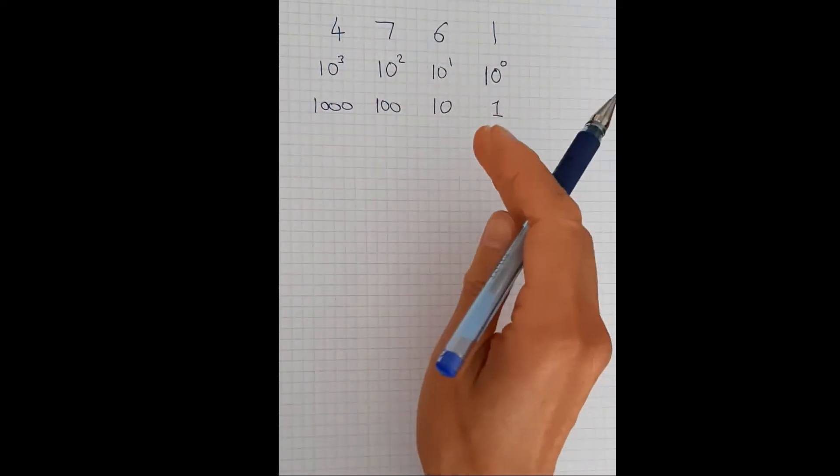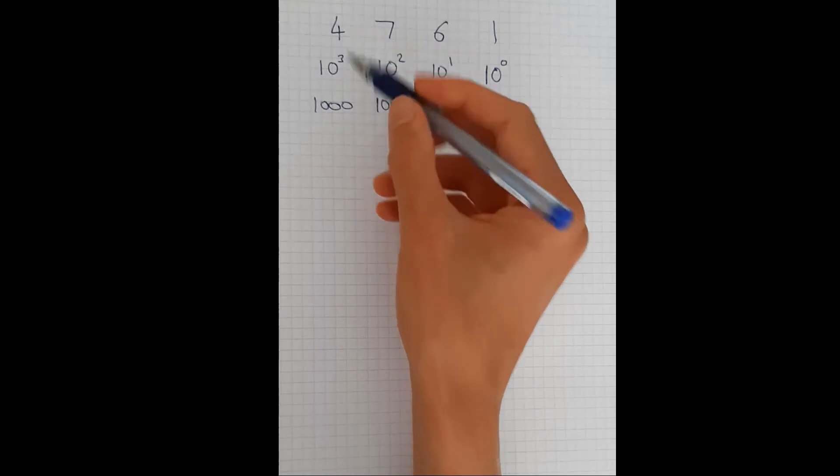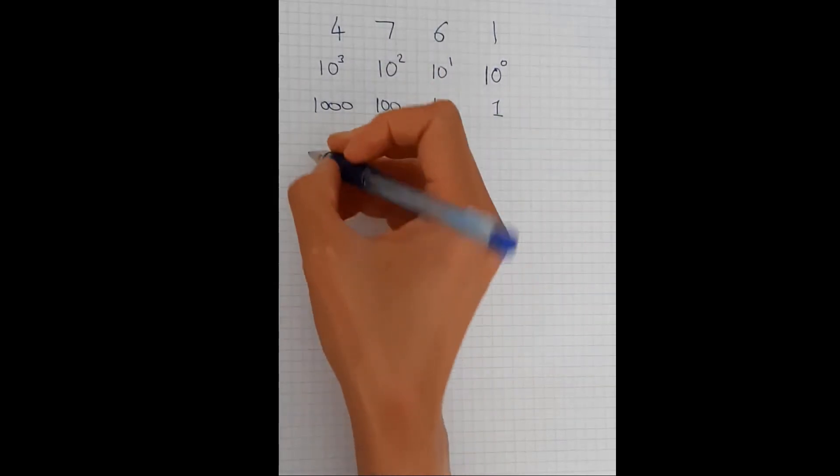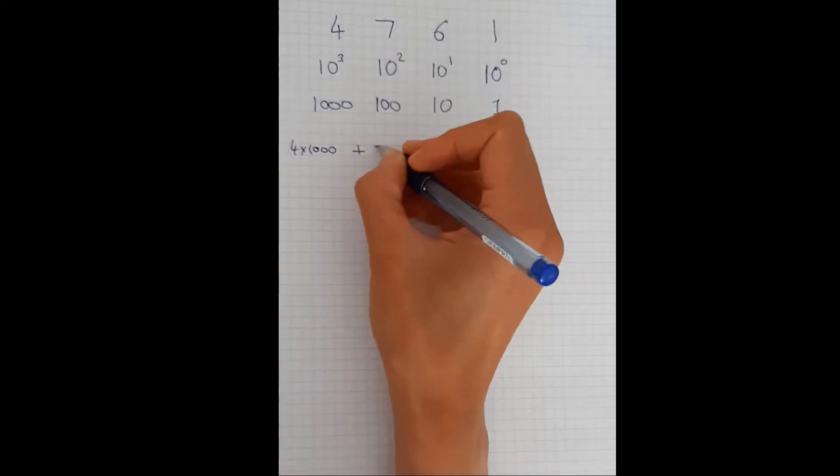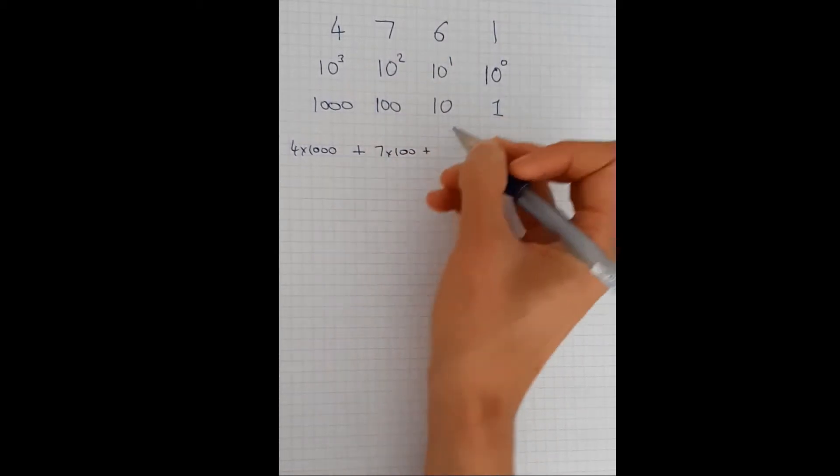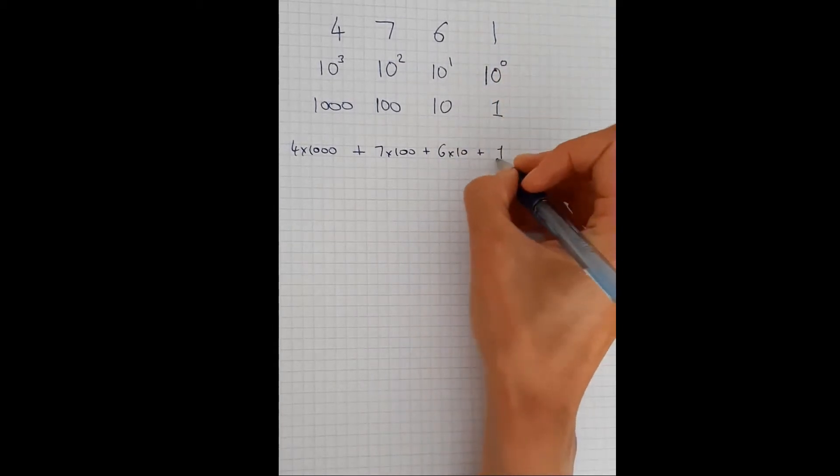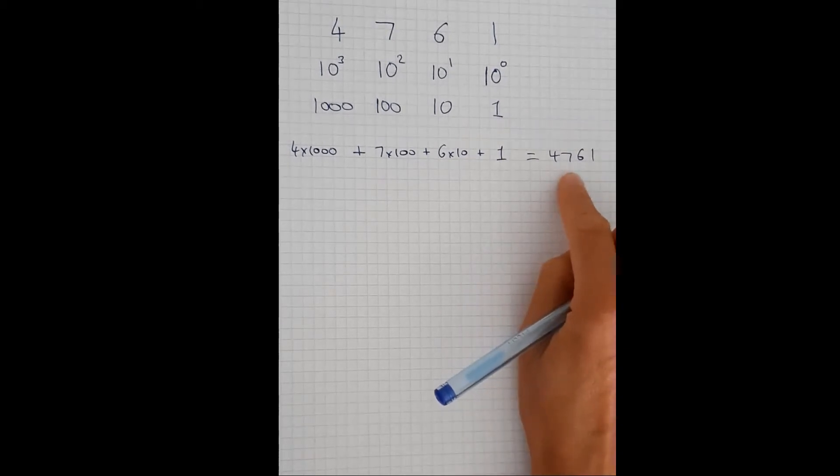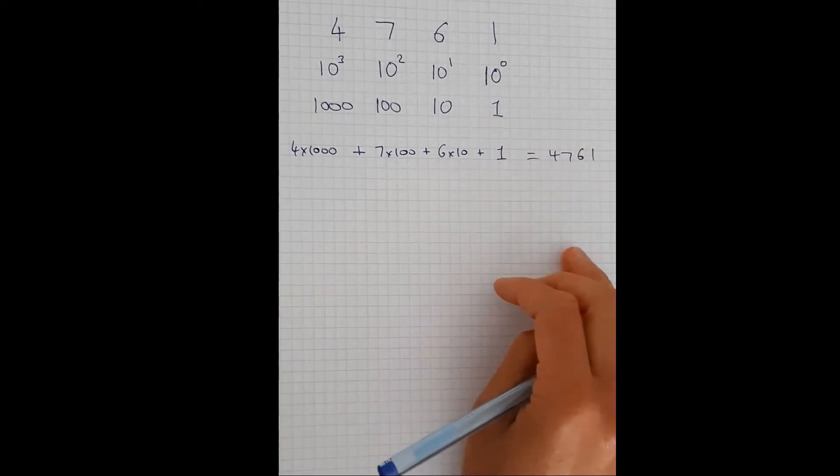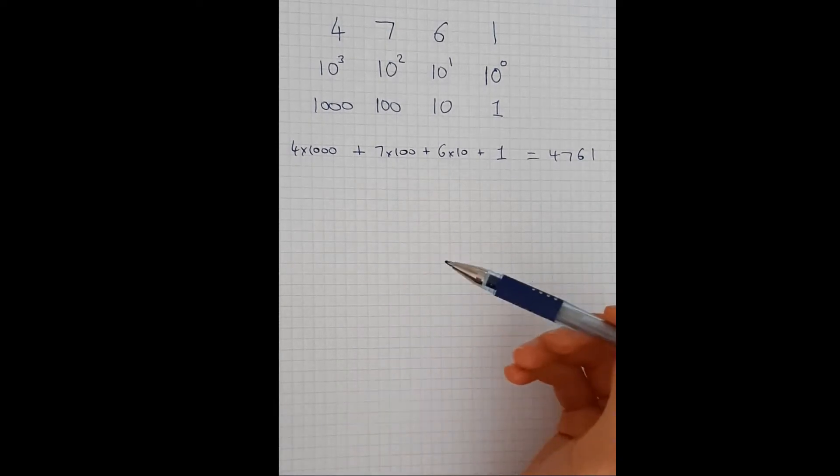When we're counting in our usual base-10 decimal system, what we're actually doing is 4 times 1,000, add 7 times 100, add 6 times 10, add 1 times 1, which gives me 4,761. We do that without thinking about it, but it's worth going through because now I want to talk about how we count in base-2.